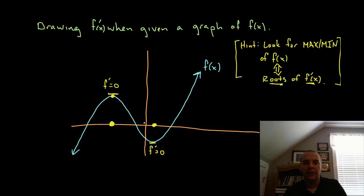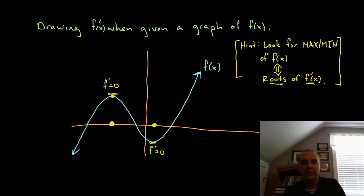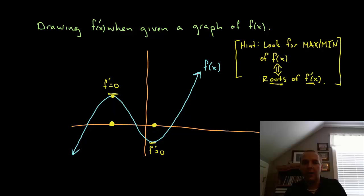So those are going to be your rock solid points that we're going to base the rest of this off of. Right now, to get the rest of the graph and figure out what it's doing before, in the middle, and after these two yellow dots, let's look at the graph of f.